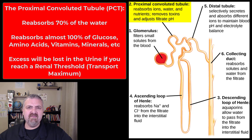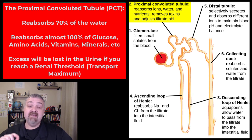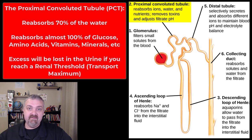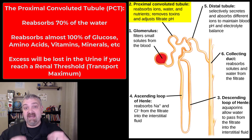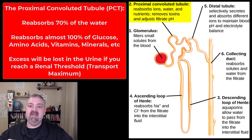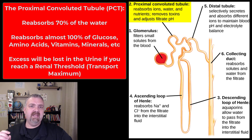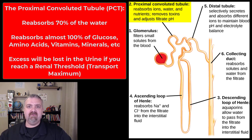Some people think finding vitamins in their urine means multivitamins don't work, but it's actually the opposite — it's evidence they do work. It means the vitamin was digested, absorbed, got into your bloodstream, and the excess was lost as urine. Glucose is the key example of where we might reach a transport maximum or renal threshold. You only have so many transporters that can reabsorb glucose.